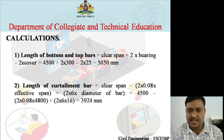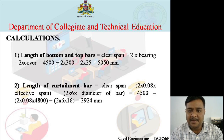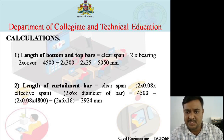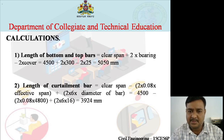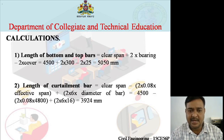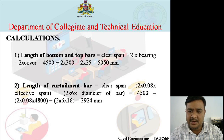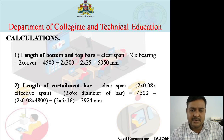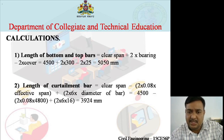According to the given data we calculate the reinforcement lengths. Length of bottom and top main bars is given by the formula: 2 × clear span + 2 × bearing − 2 × cover = 4500 + 2×300 − 2×25 = 5050 mm, that is 5.05 m. Length of the curtailment (bent-up) bar: clear span − 2 × 0.08 × effective span + 2 × 6 × dia = 4500 − 2×0.08×4800 + 2×6×16 = 3924 mm, that is 3.92 m.